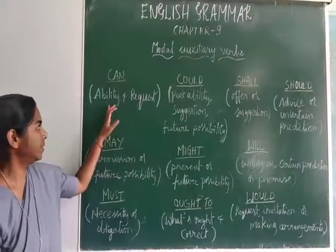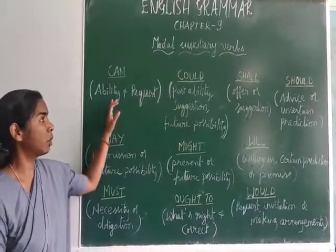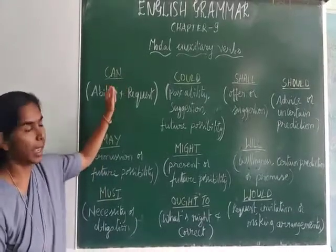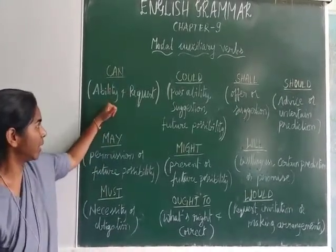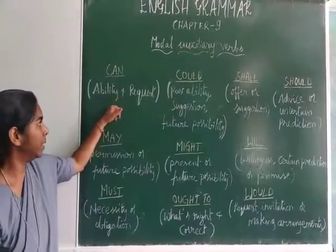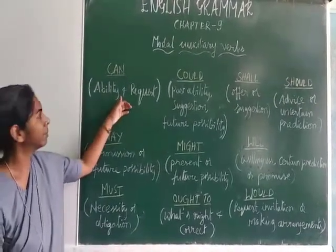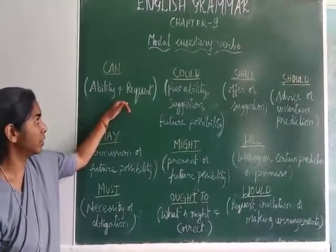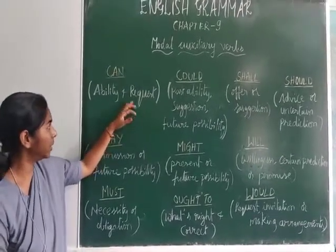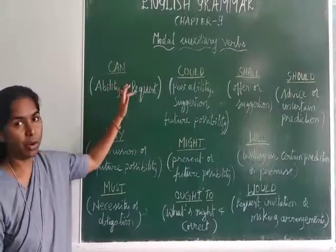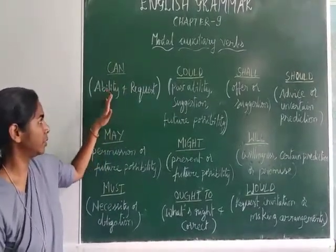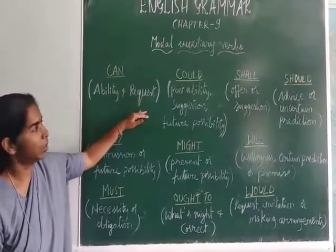Let us understand in detail what Modal auxiliary verbs express. The first one is 'can'. Can is used to express Ability — ability in doing something. Can is also used for requests — seeking or requesting for something — but can is used in an informal way of requesting. So can is used for Ability and for requests.